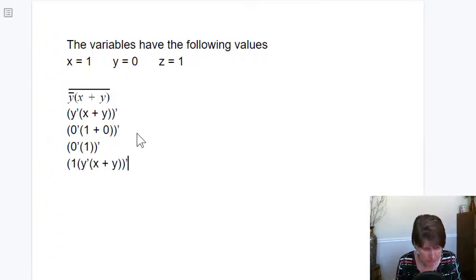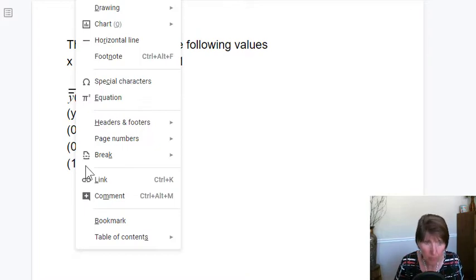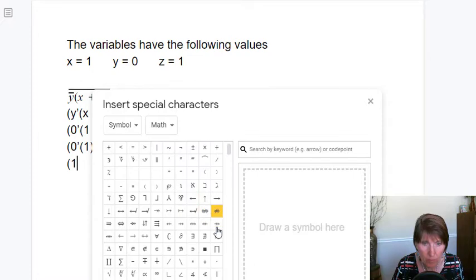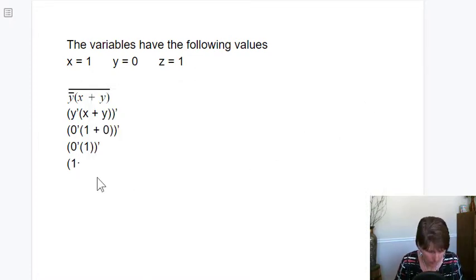And we have one times one. And we want, so now we do one times one and we get one. And then we have the complement. So what is the complement of one? It is zero.